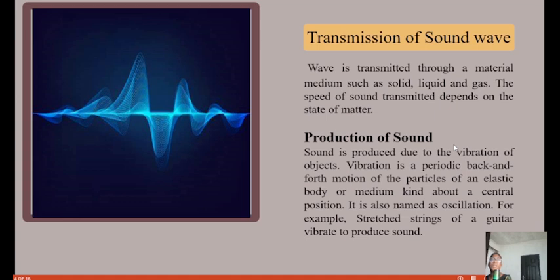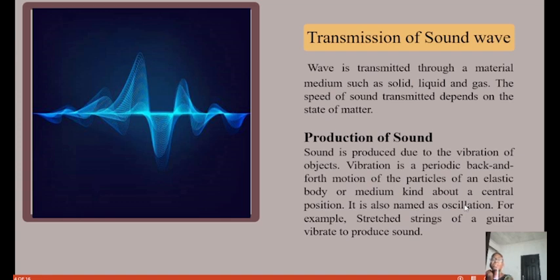Production of sound: sound is produced due to the vibration of an object. Vibration is a periodic back-and-forth motion of the particles of an elastic body or medium. It is also named as oscillation — the to-and-fro movement we mentioned in our previous class. For example, stretching of a guitar vibrates to produce sound.